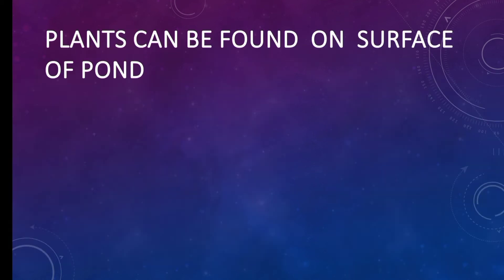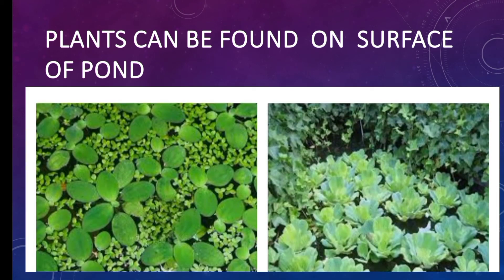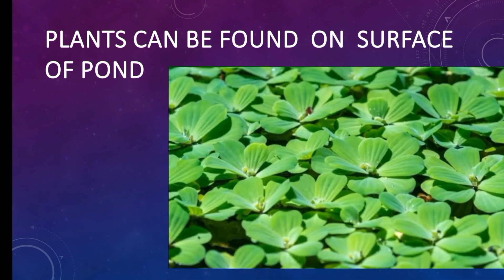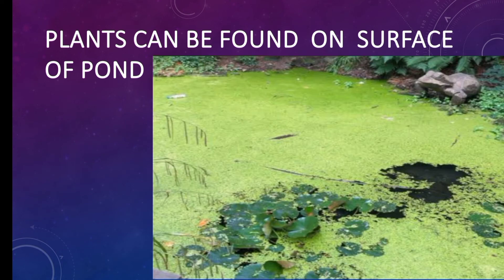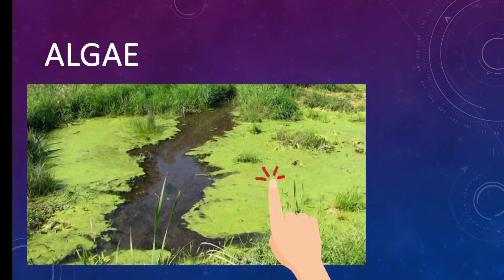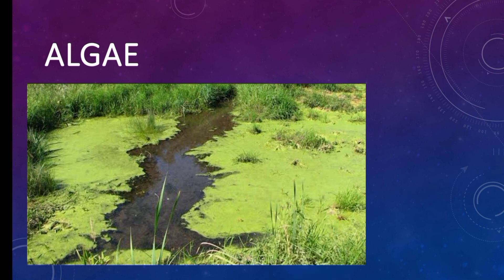Plants that can be found on the surface of the pond include water algae. Algae is a type of plant that does not have leaves, roots, or stems.